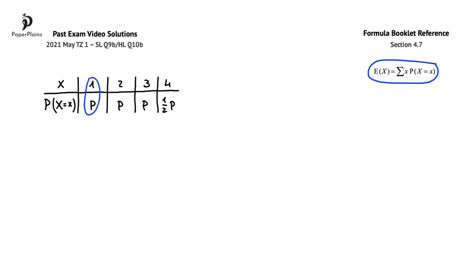So, in our solution, we'll add 1 times p, plus 2 times p, plus 3 times p, plus 4 times 1 half p.